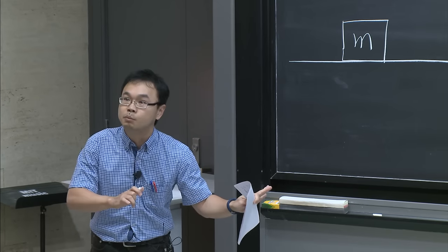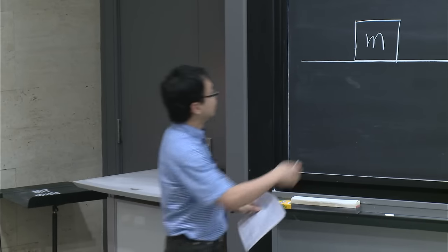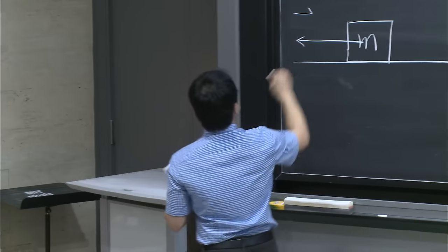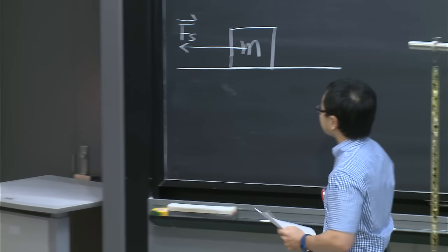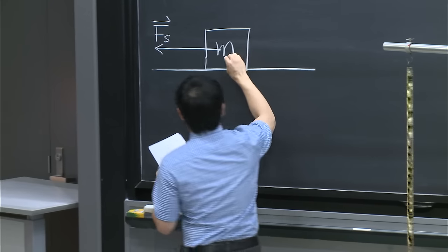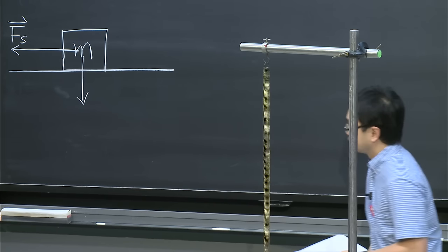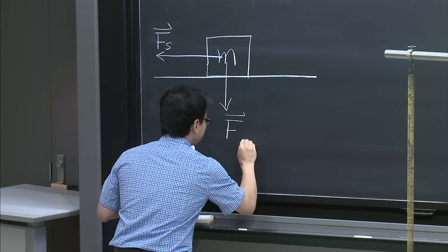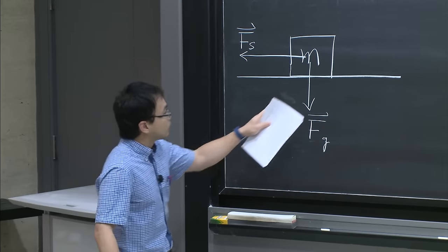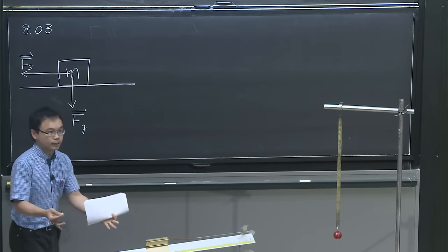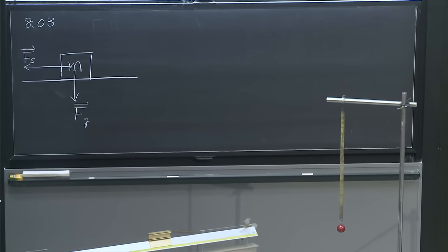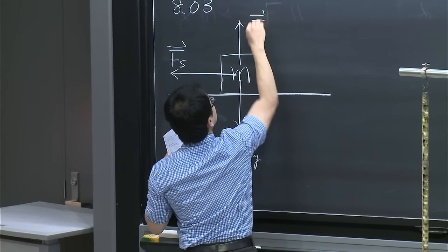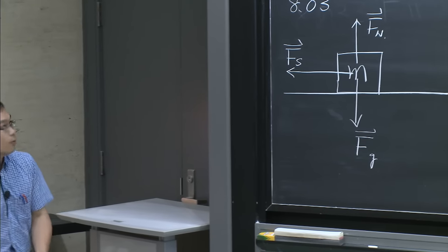Now I have the three forces and can calculate the total force. F equals F_spring plus F_normal plus F_gravity. Since we know the mass is moving in the horizontal direction, the normal force equals minus F_gravity in the y direction, where I define y pointing up and x pointing to the right. Therefore, the total force is just F_spring, which equals minus k times x(t).